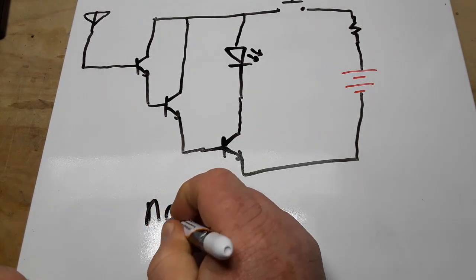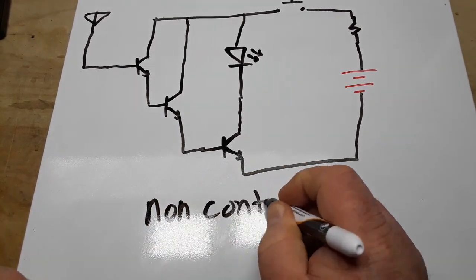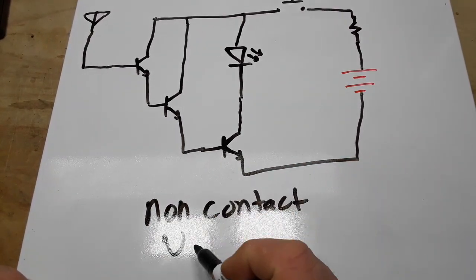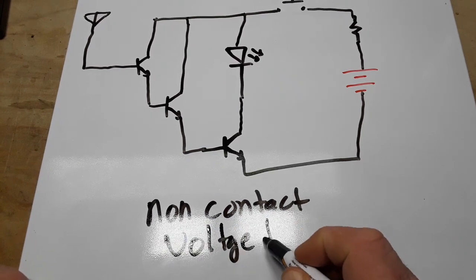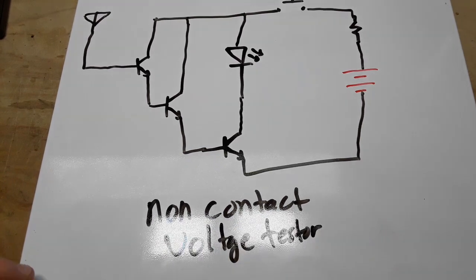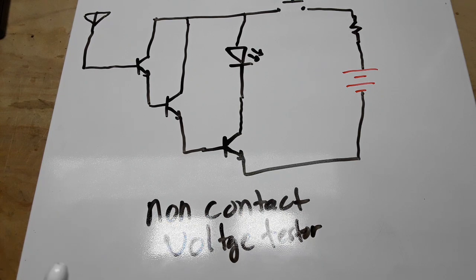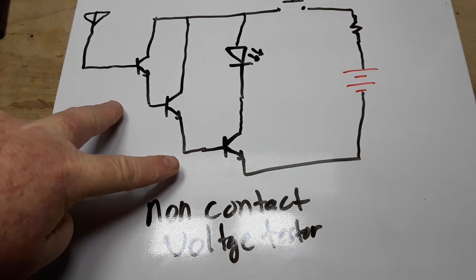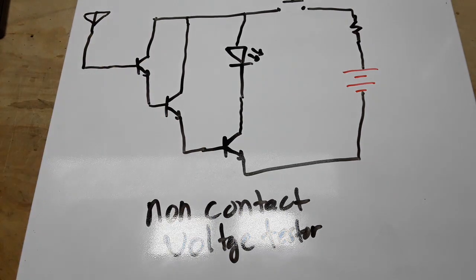What we have here is a non-contact voltage tester. If you've got a multimeter, it probably has one of these functions built into it, or you can buy them separately. Basically what it is, is we've taken this super beta transistor, these three transistors now act as one transistor, and it is going to incredibly multiply the electric field of any AC source you come near.